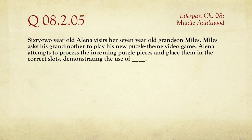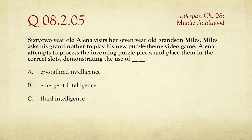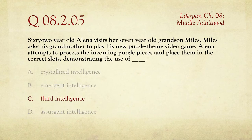Number five: 62-year-old Elena visits her seven-year-old grandson Miles. Miles asks his grandmother to play his new puzzle-themed video game. Elena attempts to process the incoming puzzle pieces and place them in the correct slots, demonstrating the use of what? Crystallized intelligence, emergent intelligence, fluid intelligence, or assurgent intelligence? The answer is fluid intelligence, because we're looking at the ability to process information — processing speed, perception, manipulation. Playing Tetris is an example of fluid intelligence.